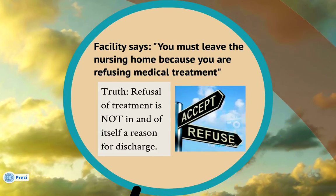A second common example of improper discharge is when the facility says to a resident, you must leave the nursing home because you are refusing medical treatment. A resident has the right to refuse medical treatment. Remember, a resident could be transferred or discharged if they posed a threat to the health of others — that's an extreme circumstance, and in most cases residents refusing medical treatment cannot be legally discharged.